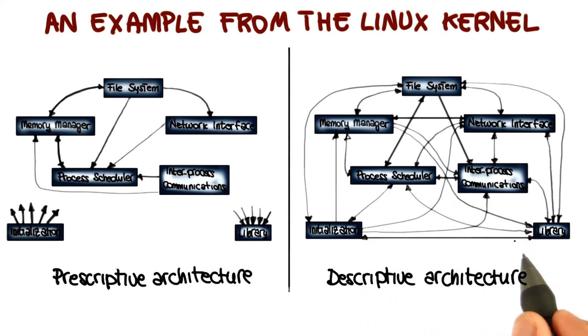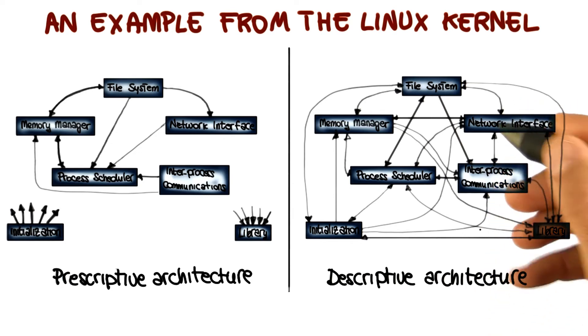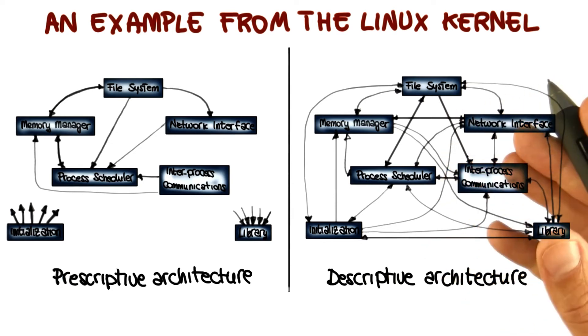As you can see, they found a number of differences or violations between the prescriptive architecture and the descriptive architecture. In particular, if we look at this architecture, we can see that pretty much everything talks to everything else, which is in general not a good thing.